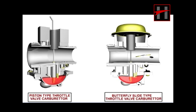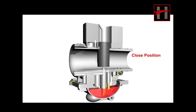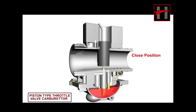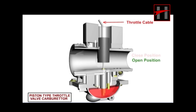What you see on screen is a piston type throttle valve carburetor. In this type of carburetor, the venturi size is controlled by the piston valve, which is directly operated by the throttle cable.